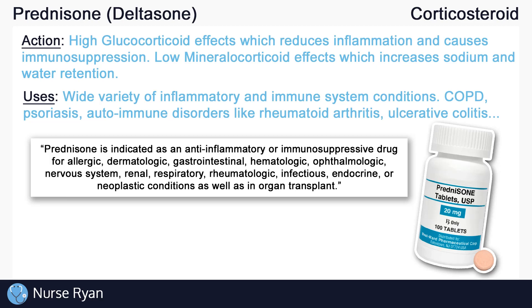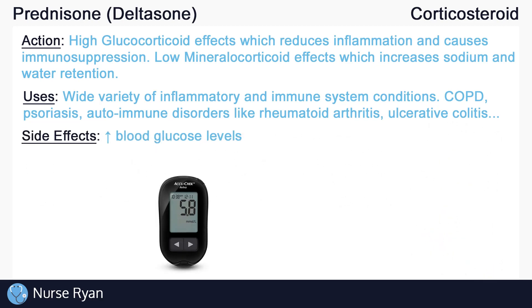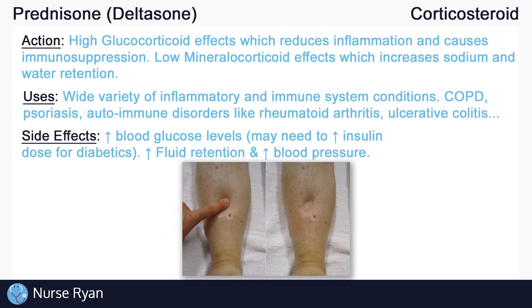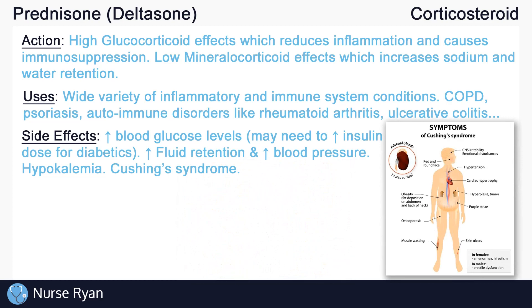There are however many side effects of prednisone. Taking high doses or taking prednisone over an extended period of time may result in increased blood glucose levels, so be especially careful in diabetic patients — insulin orders may even need to be increased. Prednisone may also cause fluid retention and increased blood pressure from those mineralocorticoid effects, and it may cause hypokalemia, or abnormally low potassium levels. With high or long-term doses of corticosteroids, you may even see something called Cushing syndrome, which presents as weight gain especially in the face and upper back area, pink or purple stretch marks, high blood pressure, and much more.